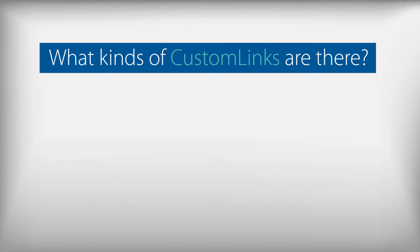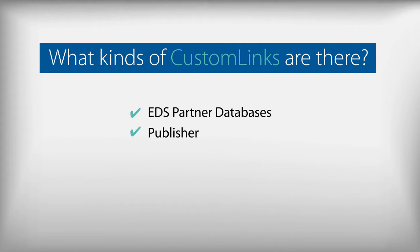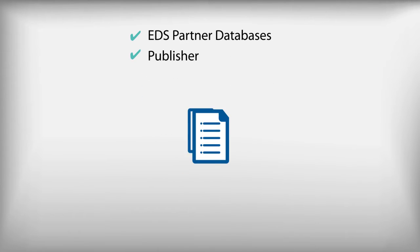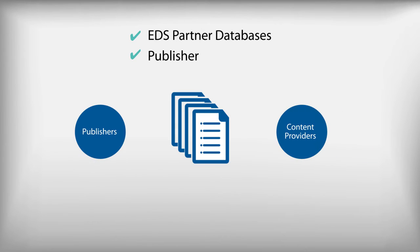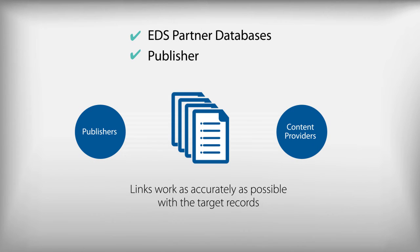What kinds of custom links are there? EDS partner databases and publisher custom links are the most important links to consider when updating your EDS profile. As new content becomes available, EBSCO works with publishers and content providers to ensure that these links work as accurately as possible with the target records.